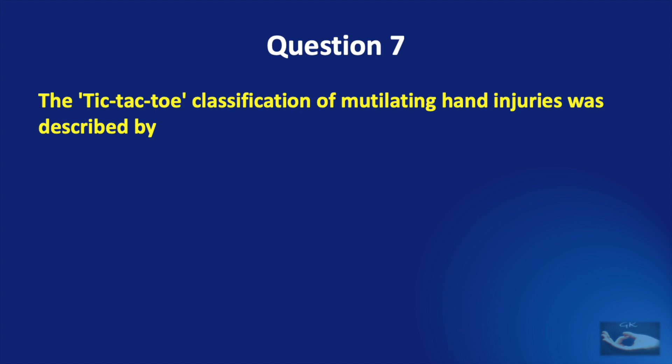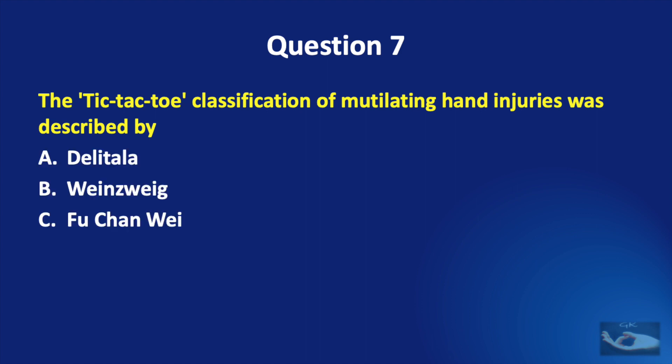Question number 7. The tic-tac-toe classification of mutilating hand injuries was described by: Delitala, Weinzweig, Foo Chan-wee, or Rankin-Wakefield?